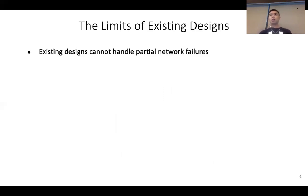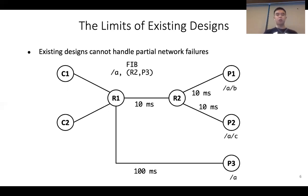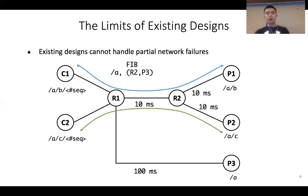This design is known to have limitations in handling partial network failures. As a concrete example, consider a topology with two consumers connecting to two routers and three producers. R1 initially has the FIB entry /A with R2 ranked higher than P3, because R2 has a shorter delay to reach P1 and P2. C1 is fetching data under /A/B (the blue flow), while C2 is fetching data under /A/C (the green flow).